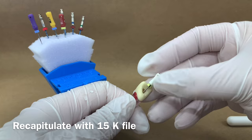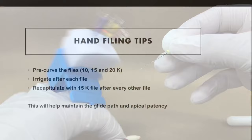Remember to recapitulate or go back in with the smaller 10 or 15K file to make sure you have apical patency or no blockages.